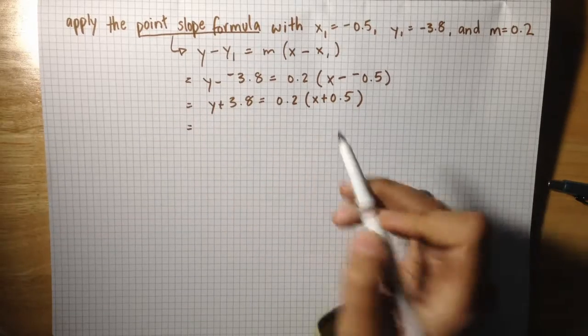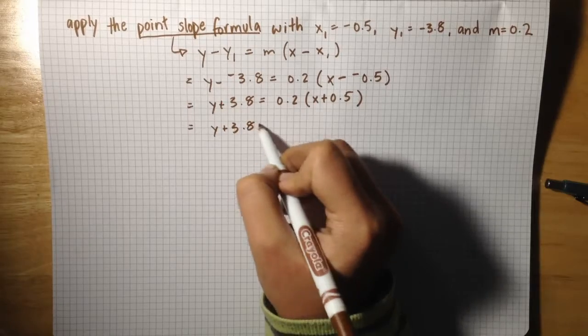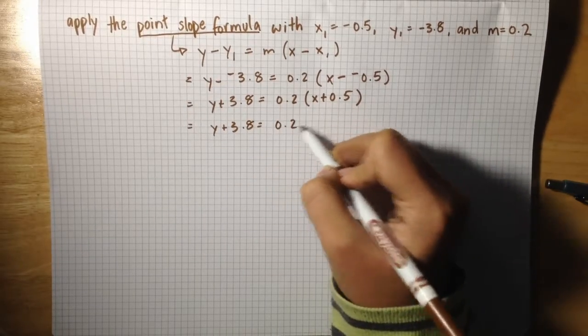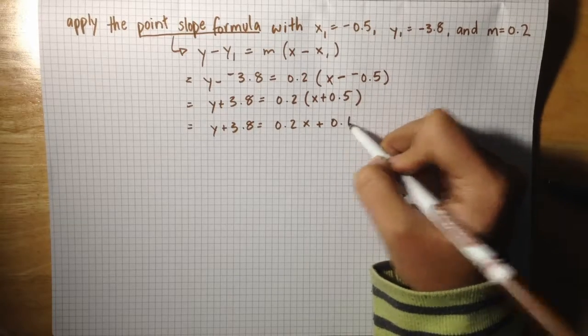When we distribute this into this parenthesis, we get y plus 3.8 equals 0.2x plus 0.1.